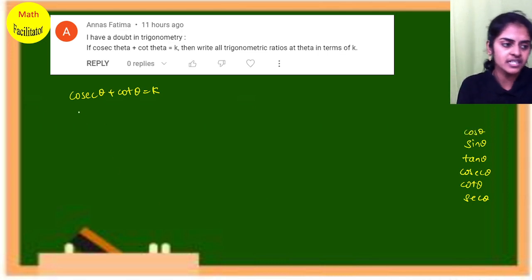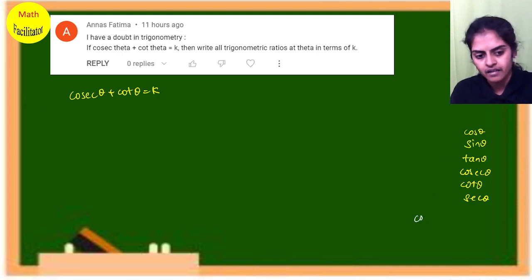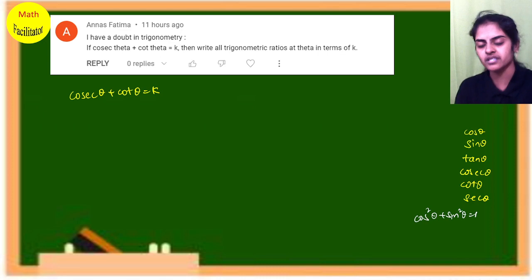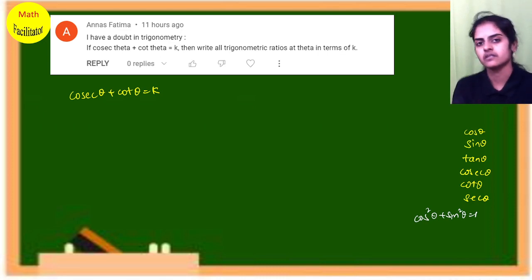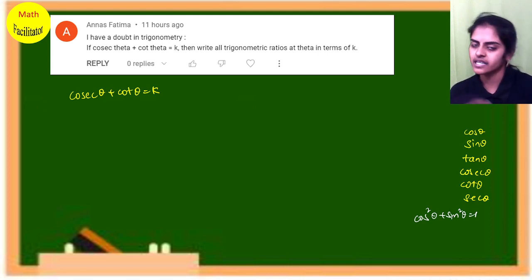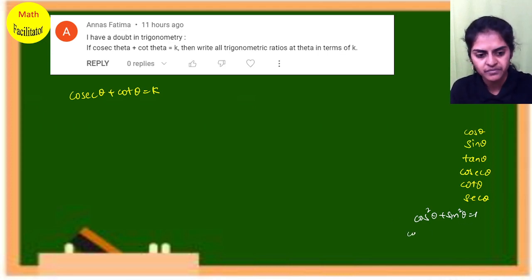Always remember we have three identities. The first: cos²θ + sin²θ = 1. Those who have seen my concept video, I told you the trick of how to remember the identities. The second: cosec²θ − cot²θ = 1. And the third: sec²θ − tan²θ = 1.